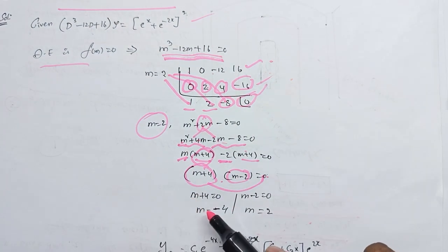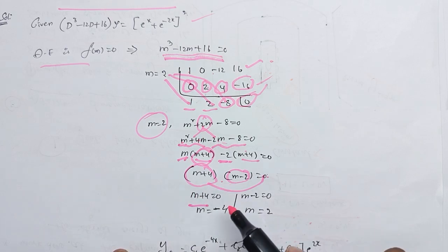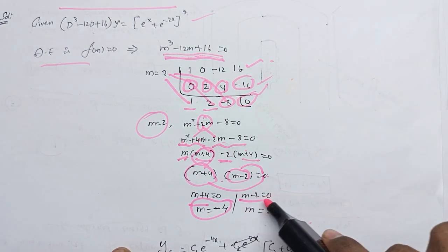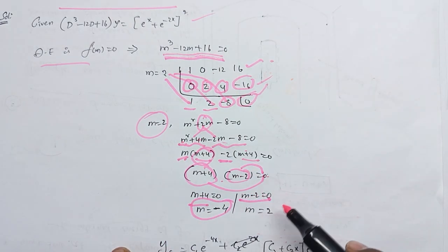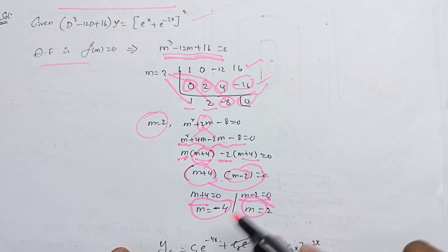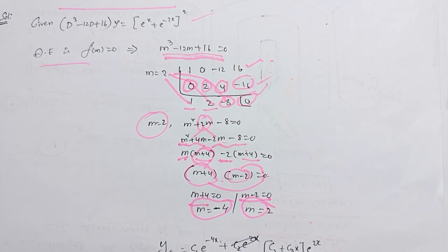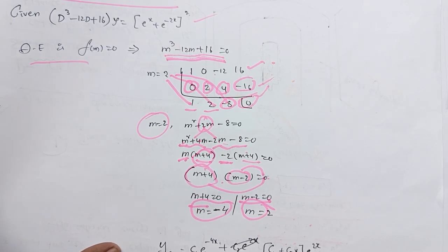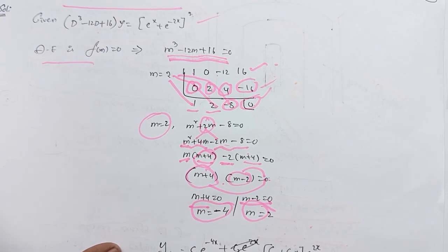So the first term equals plus 4, which was minus 4. The second term equals minus 2, which was plus 2. So y is equal to 0; m is equal to root minus 4 and 2. So there are two real numbers. If you observe, you have two roots or three roots.